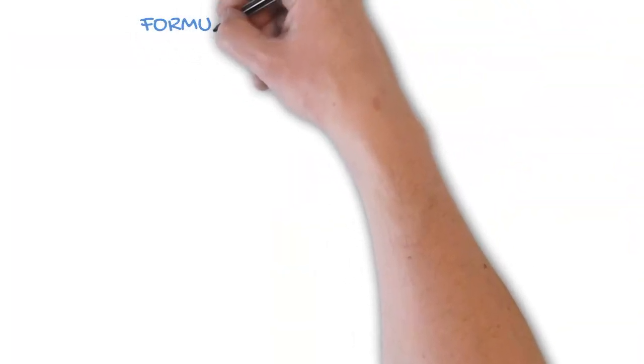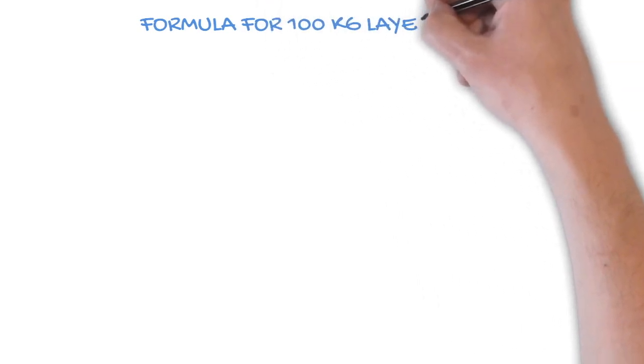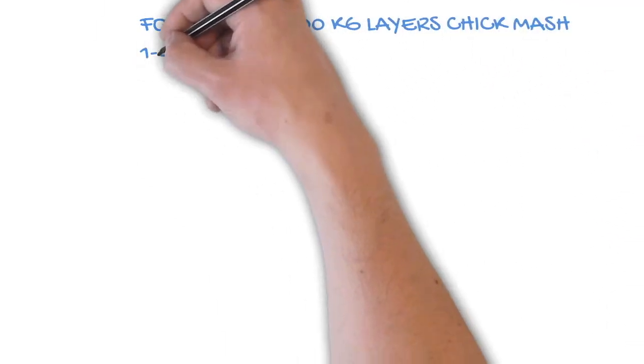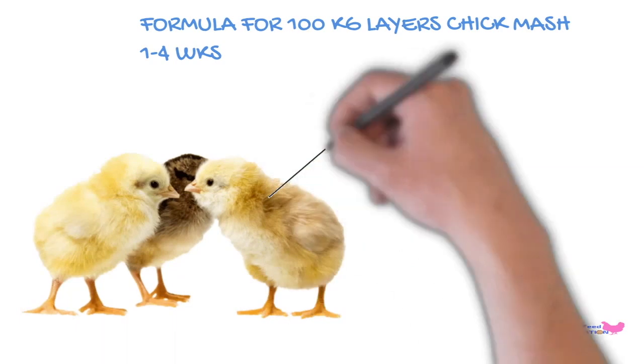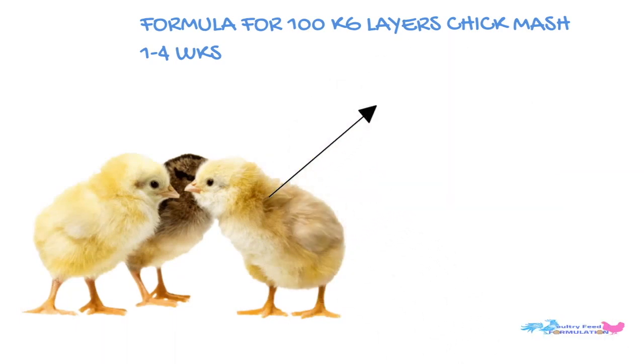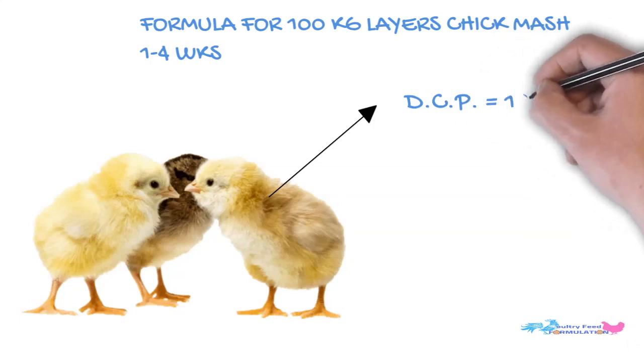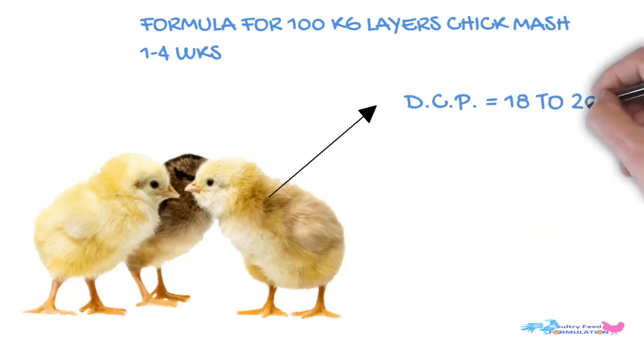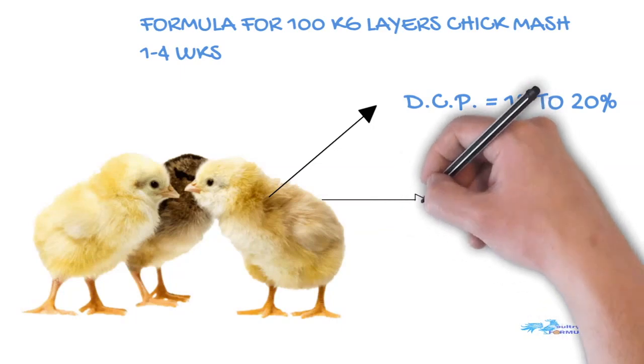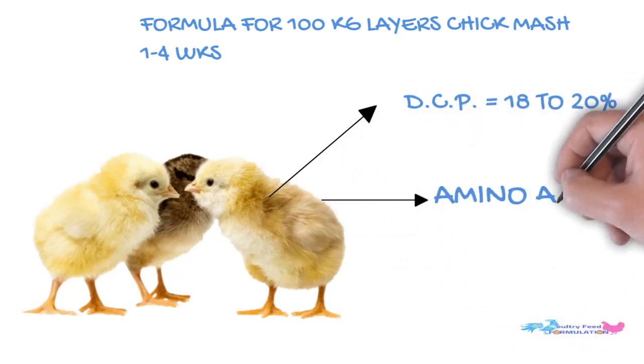Today, I'm going to reveal to you formula for 100 kg of layers chick mash, 1-4 weeks. Since the chicks are growing, chicks require feed with digestible crude protein, DCP, of between 18-20%.